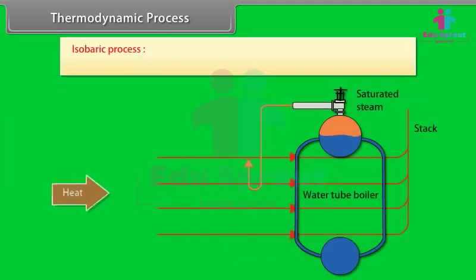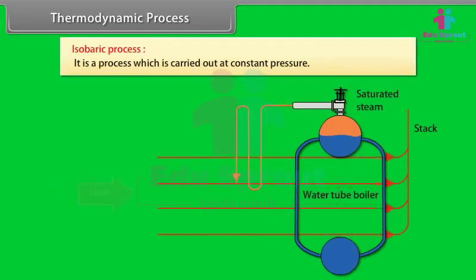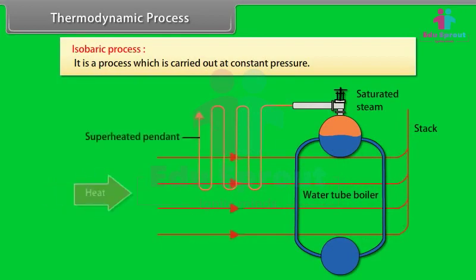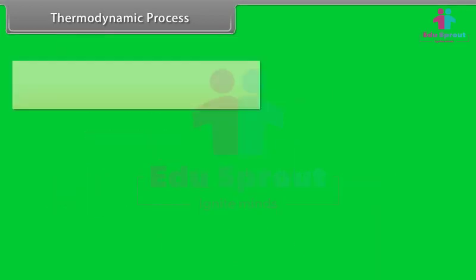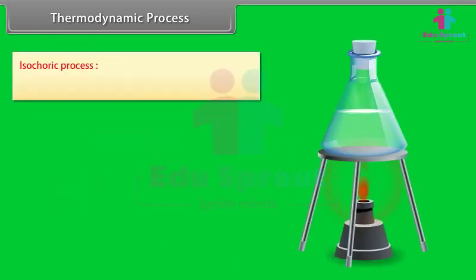Isobaric process: it is a process which is carried out at constant pressure. Isochoric process: it is a process which is carried out at constant volume.